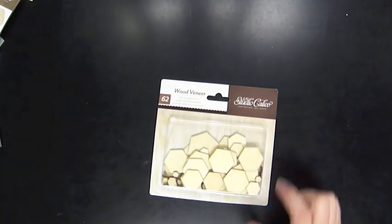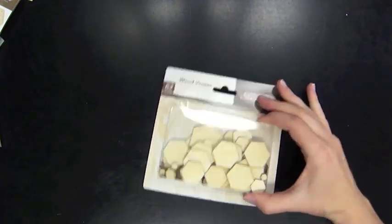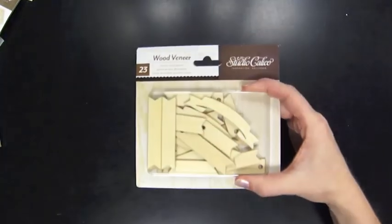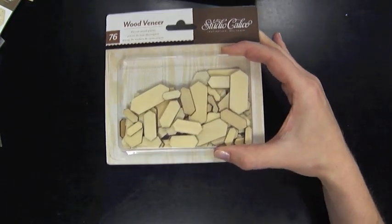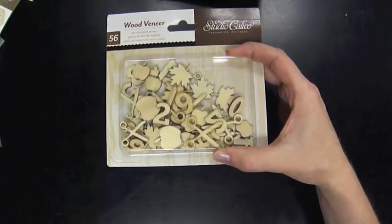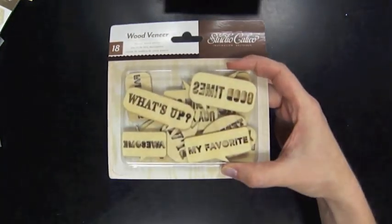Here are some of the American Craft stickers that coordinate with the Studio Calico collections. Another favorite from Studio Calico is the wood veneer. So we have the wood veneer shapes and hexagons, banners, lots of circles and different borders, more hexagons. A pack that coordinates with the yearbook collection with apples and leaves and numbers and things like that. Speech bubbles with cool phrases inside them.